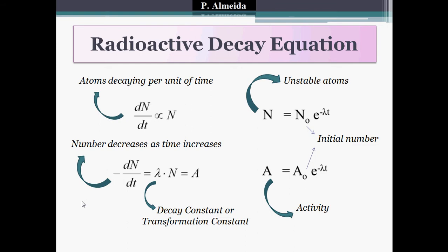I know that minus ΔN over ΔT is equal to a constant times N — because if it's proportional, there must be a constant. That constant lambda times N is equal to A (or R), the rate of decay, the activity of my sample. Lambda is known as the decay constant or the transformation constant — it tells you at what constant rate the parent nuclei are going to decay. Lambda times the number of parent nuclei equals the activity.